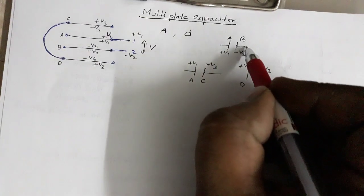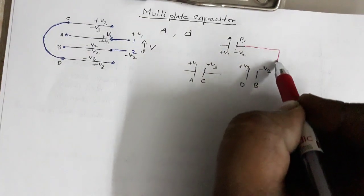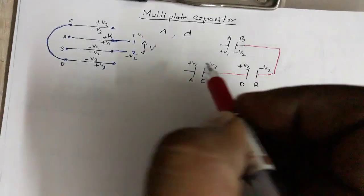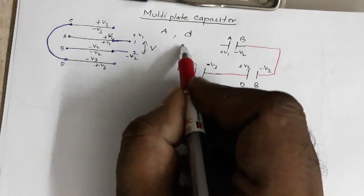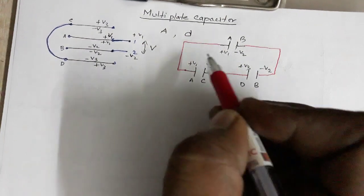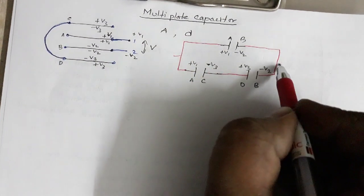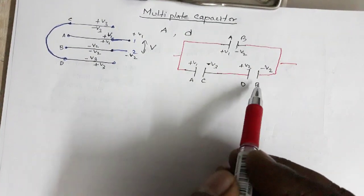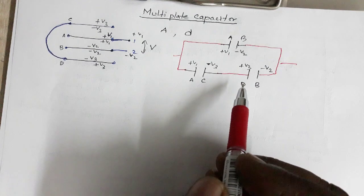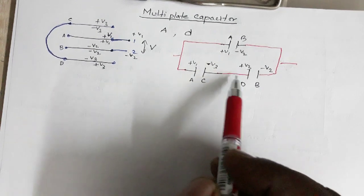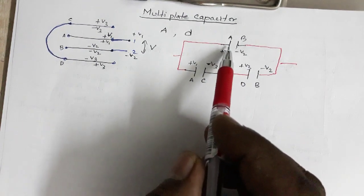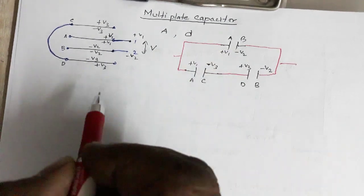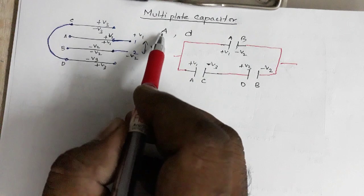Looking at the circuit, the capacitor between A–C and the capacitor between D–B share the common node V2, so those two are in series. This series combination is then connected in parallel with the capacitor between A and B.